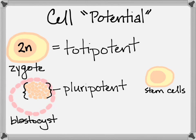Some cells called stem cells maintain the ability to become many cell types. They are undifferentiated, and we call them multipotent.